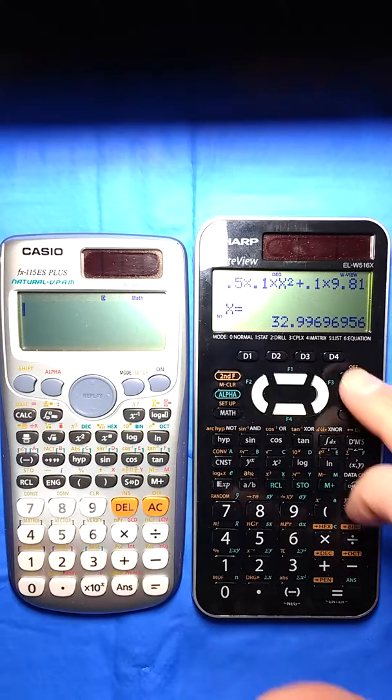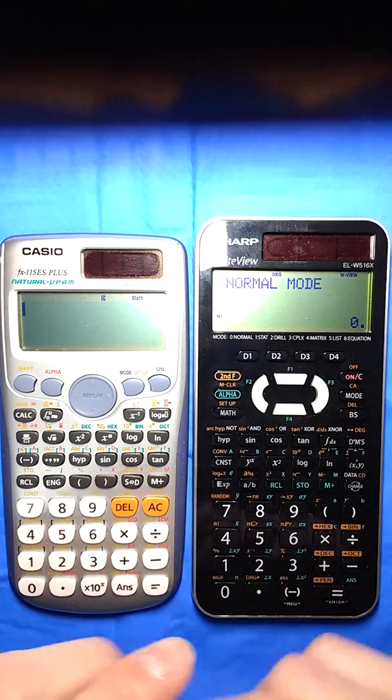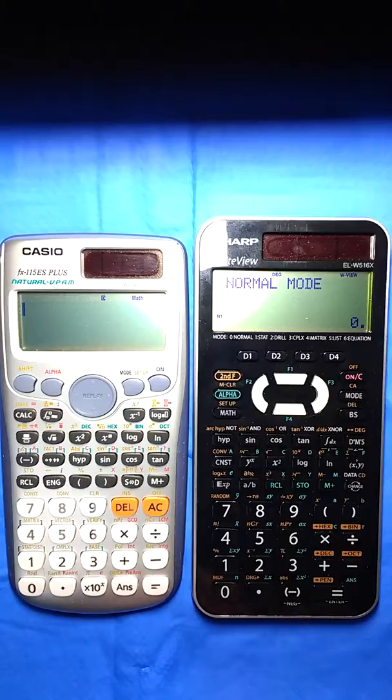Let's try the same thing on the Sharp. The big difference here is it will only solve for x, and you have to have everything on one side of the equation set equal to zero.